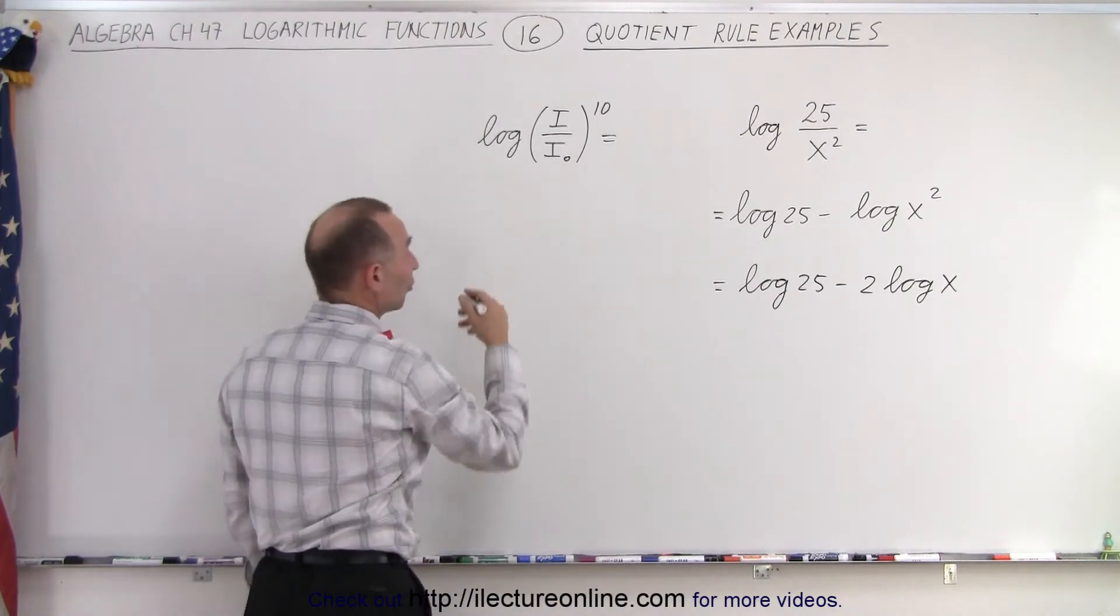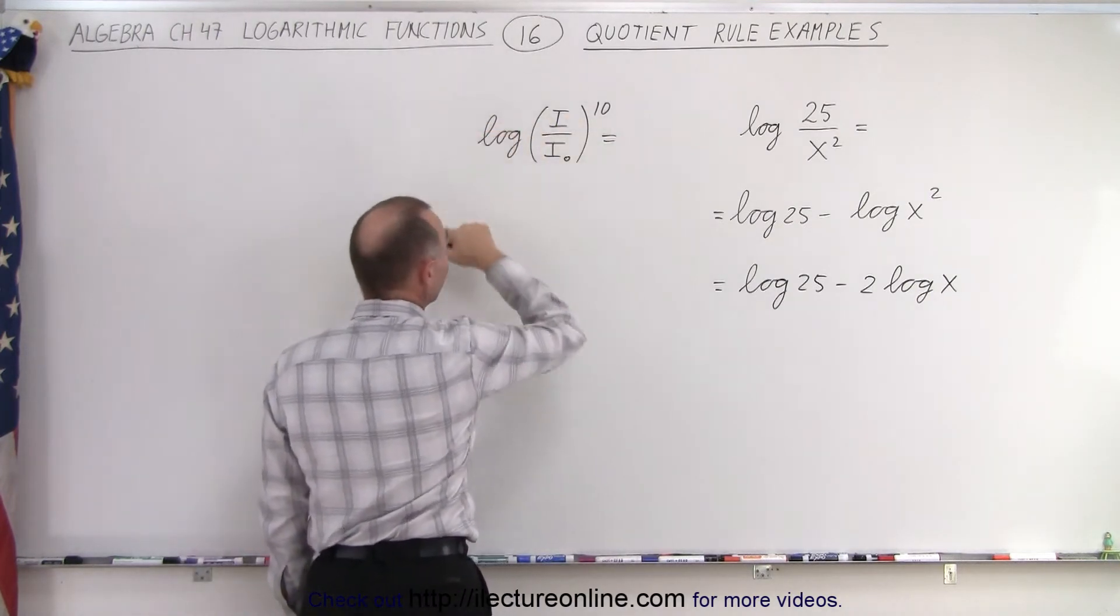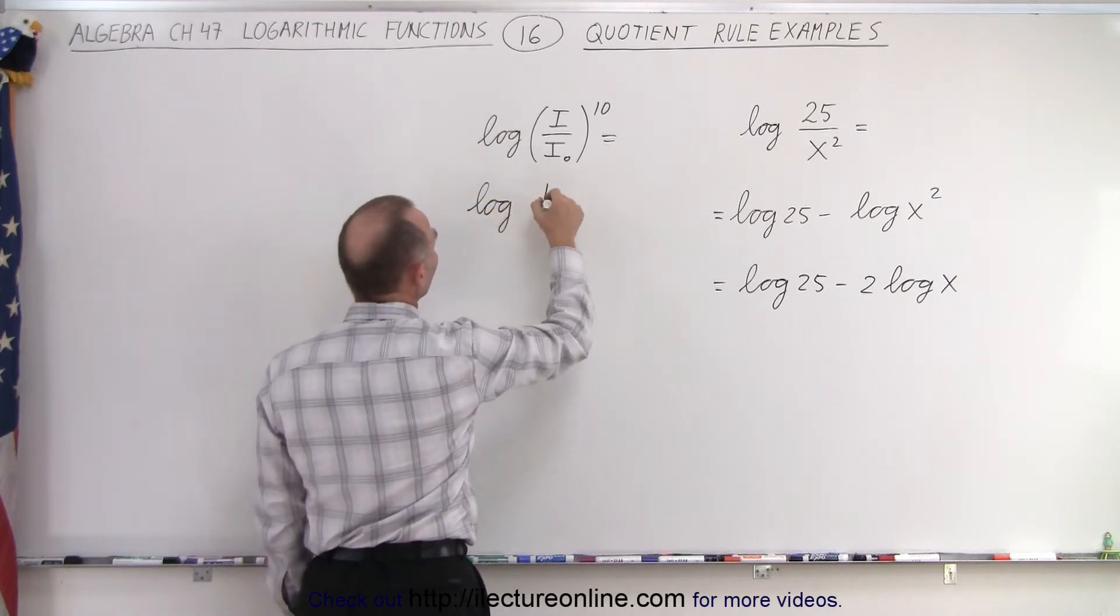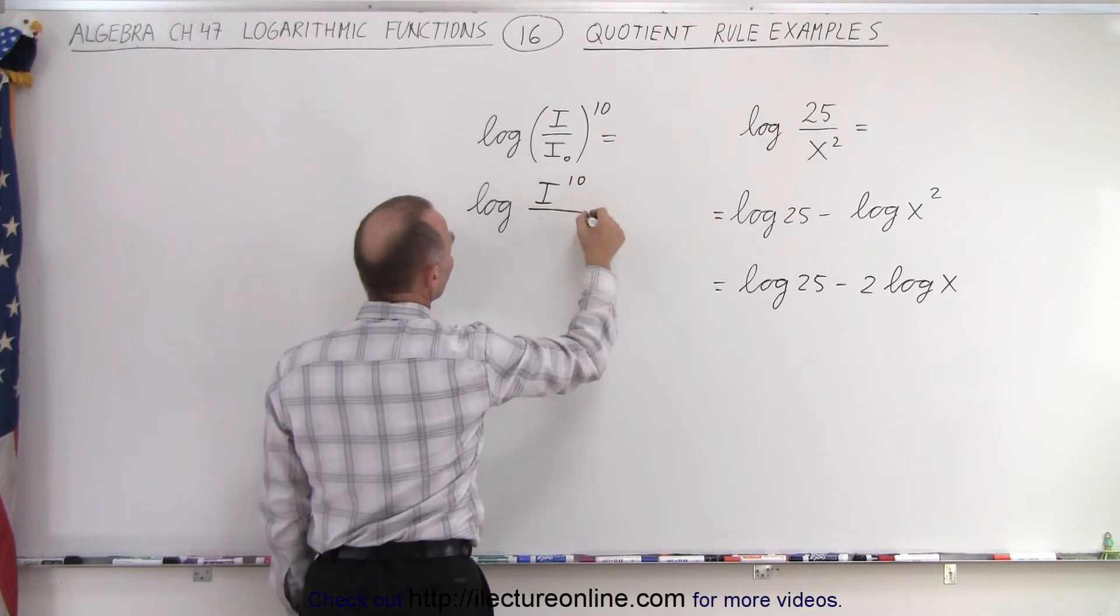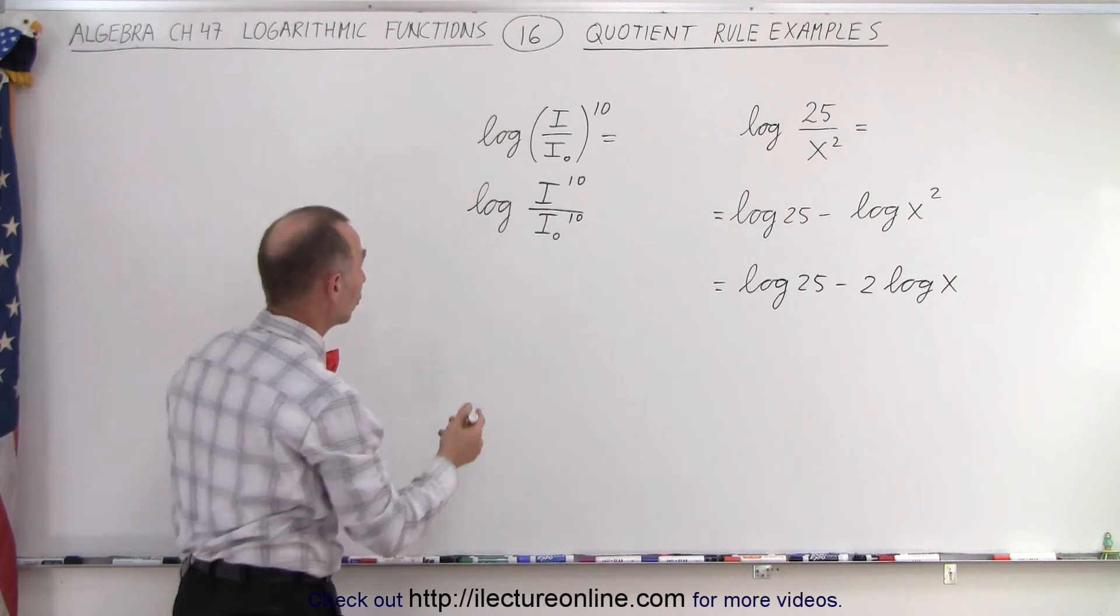Over here, what we could do, there's various things we could do. We could first actually take the 10 and move it in front, but we can also do the following. We say this is equal to the log of i to the 10th power divided by i sub naught to the 10th power. And now we have clearly a quotient.